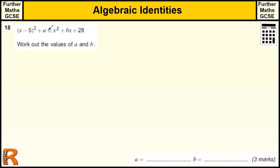OK, so we're given an identity here. We know it's an identity because it's got three lines here, so it's just two lines for an equal equation.